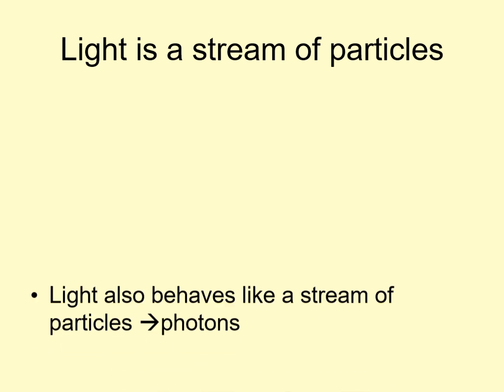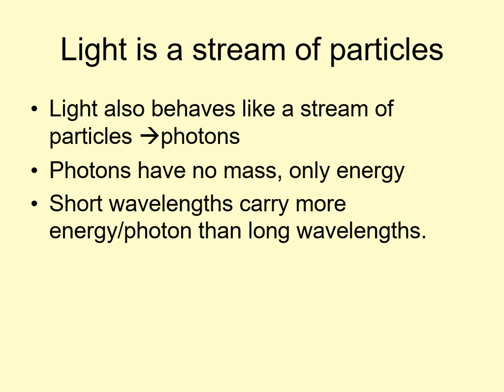So what about the other picture of light, treating it as a stream of particles? In this approach, we treat light as being made of a stream of discrete bundles of energy called photons. Photons have no mass. They just carry energy, and they all move at the speed of light.